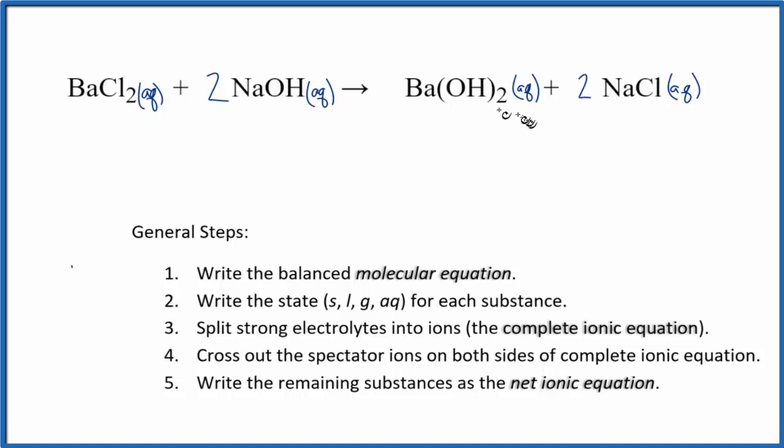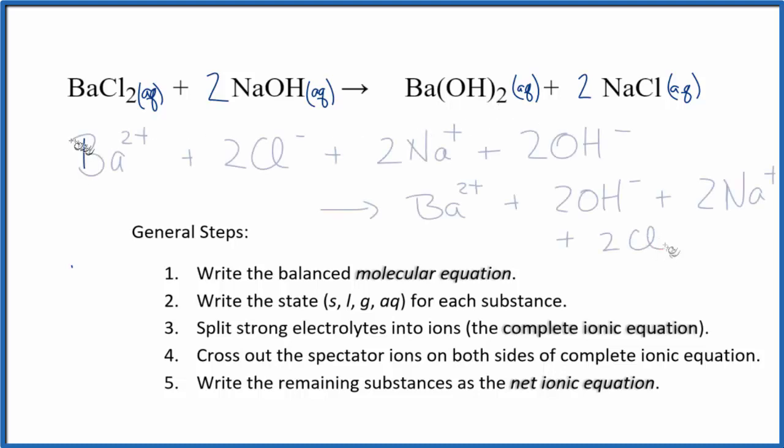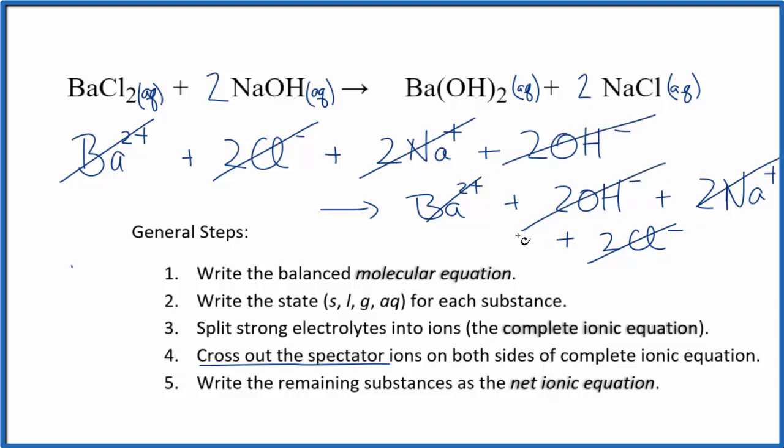If you look at the ions, they look like this. So these are our reactants, and these are our products. When we went to cross out the spectator ions, we have barium in the reactants and the products, we have two chlorines here in the products, two sodium ions here, two sodium ions here, two hydroxide ions, and then two more.